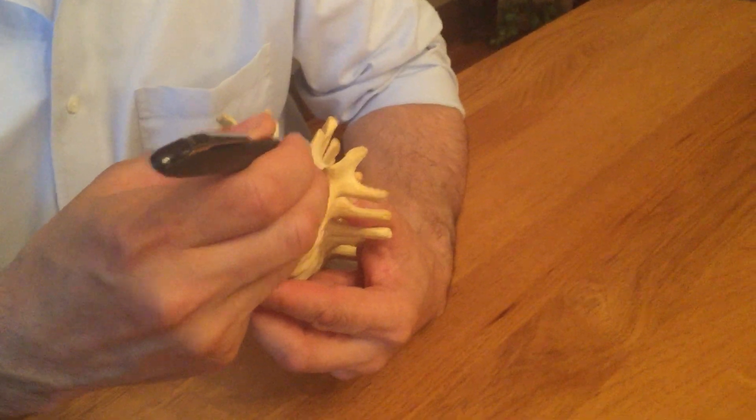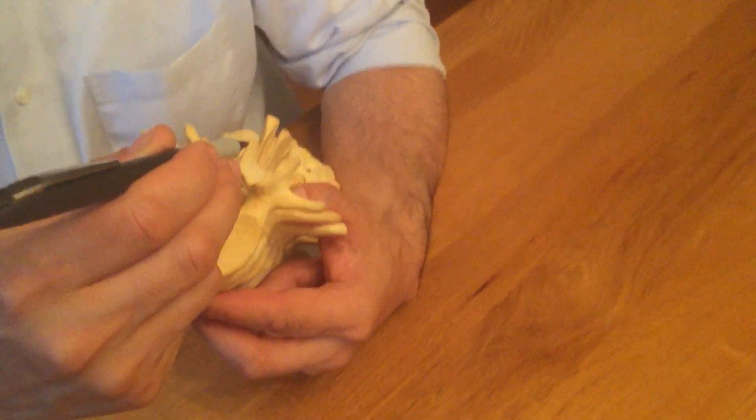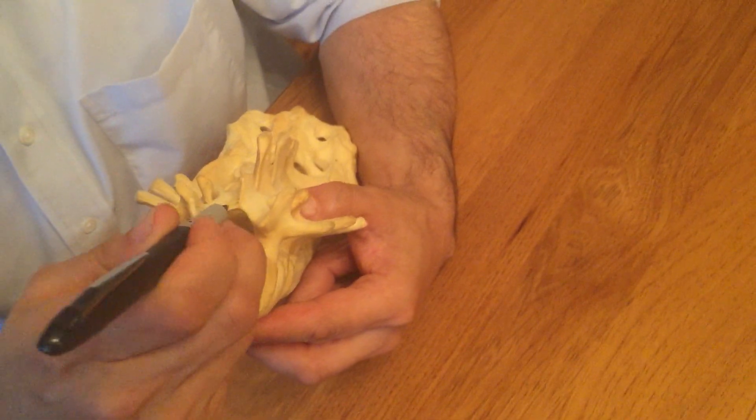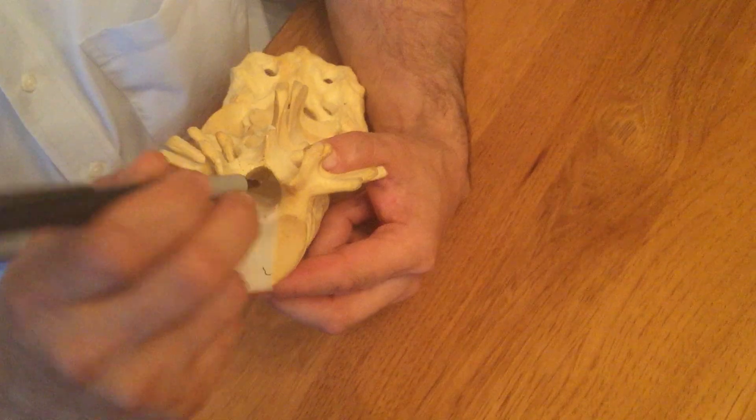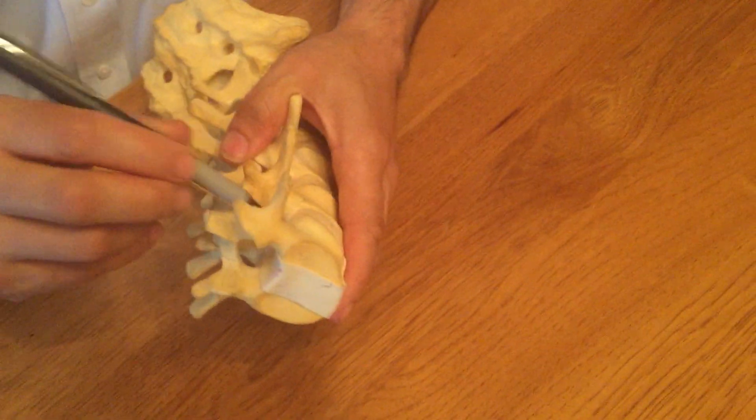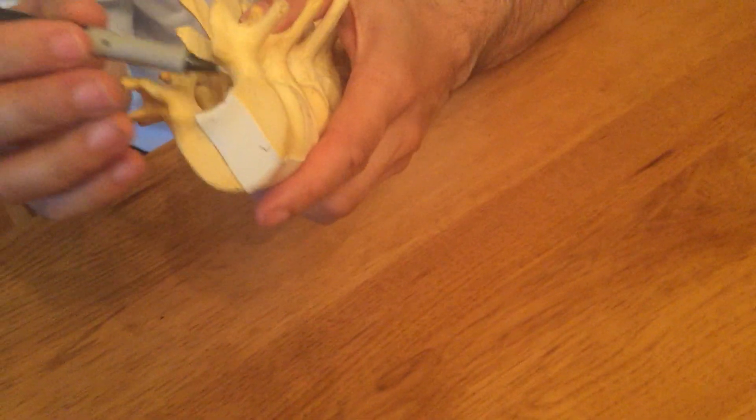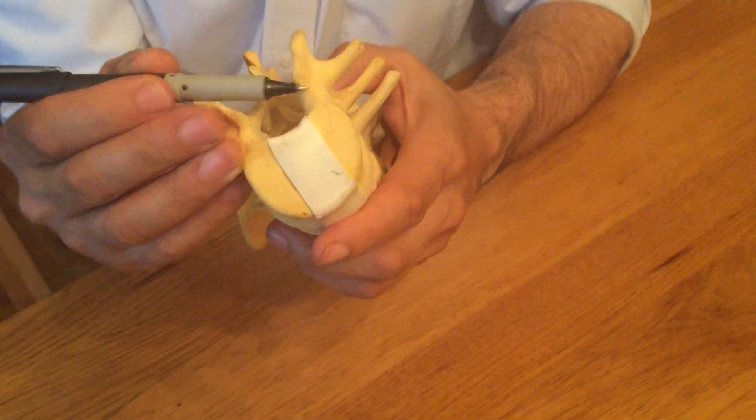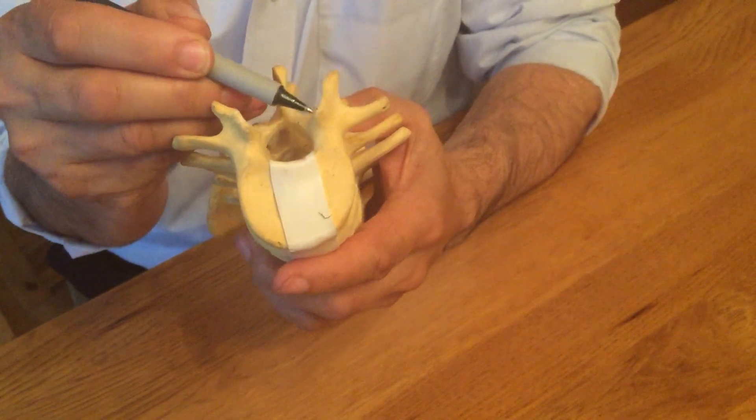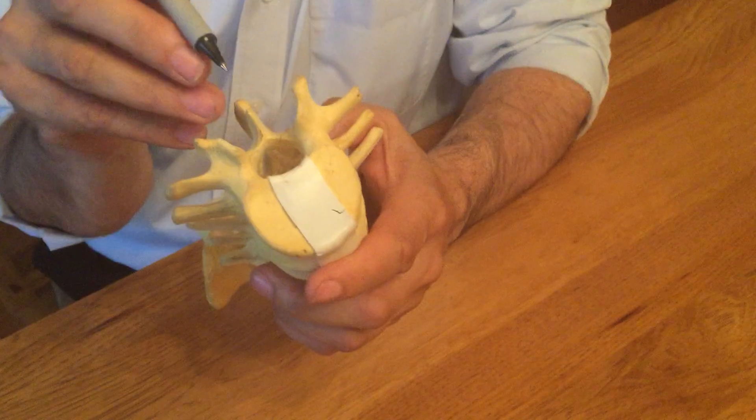Without removing the lamina completely, or removing the muscle attachment to that, we undercut it. So we open up the spinal canal. Then we literally go to the foramen on the other side, which practically with this angle, right there, and remove all the tissue that pushes on the nerve root that is on the other side.